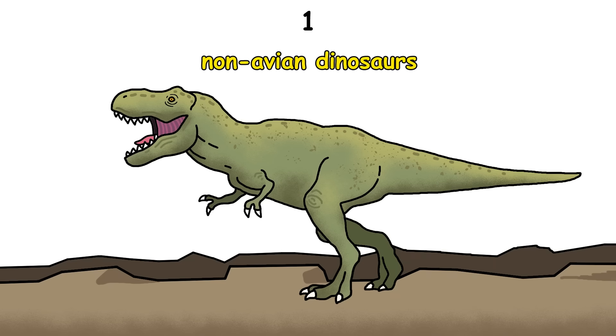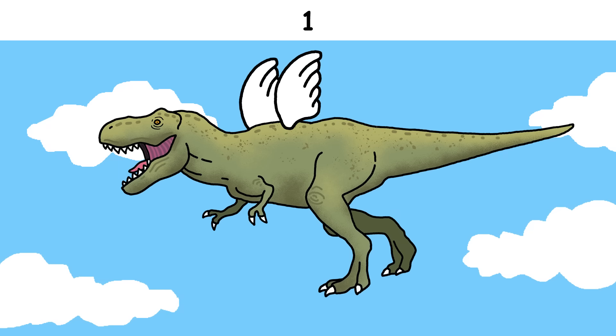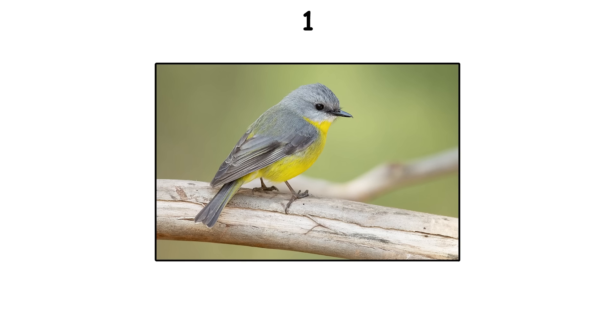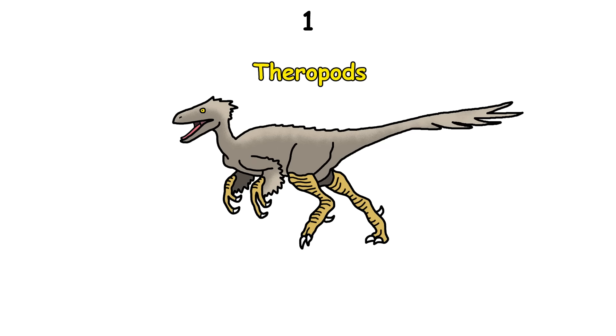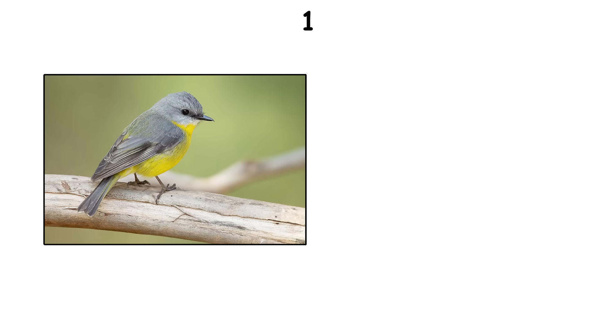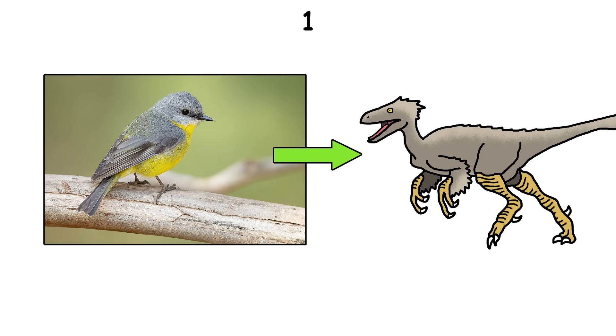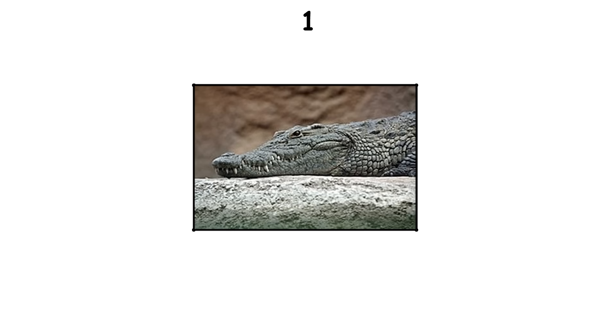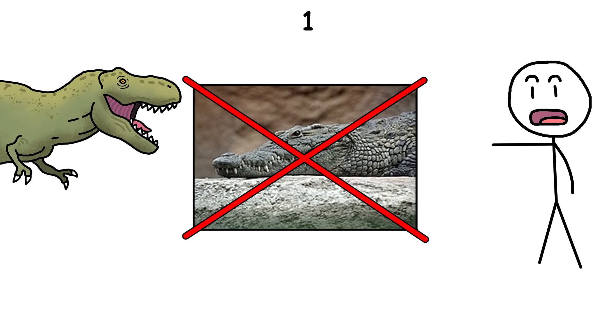Not all dinosaurs went extinct. Only the non-avian dinosaurs, the ones that couldn't fly, died out. Birds evolved from a group of dinosaurs called theropods and are still alive today. This means birds are actual living dinosaurs and not just related to them. Crocodiles, on the other hand, aren't living dinosaurs like many think.